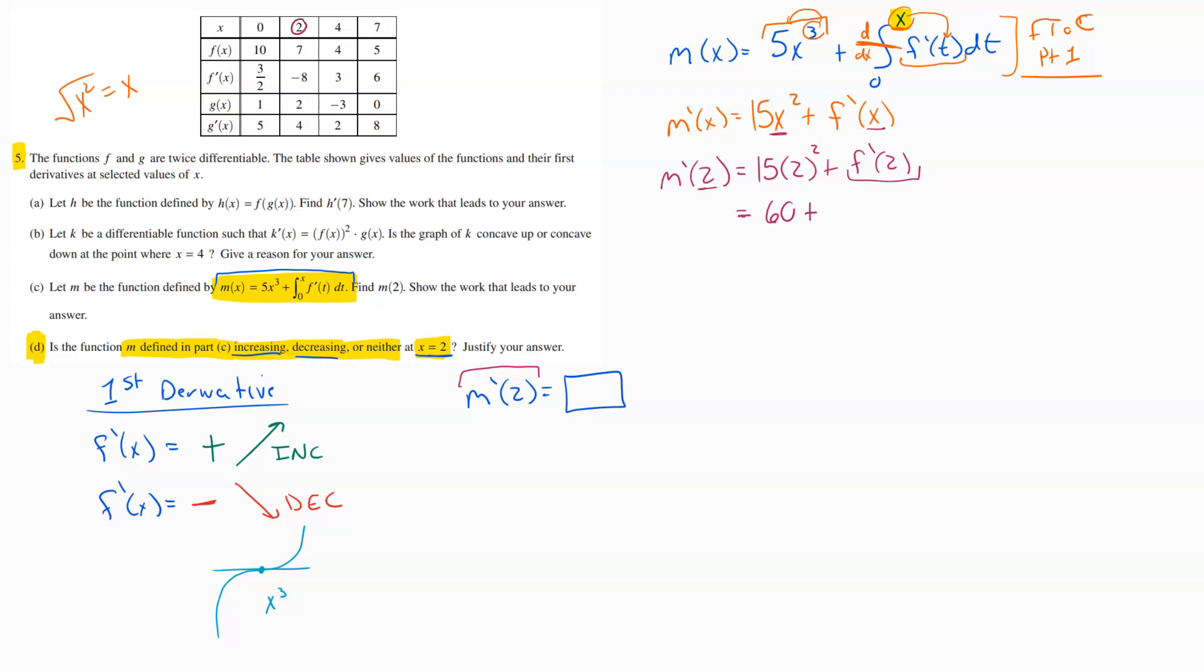4 times 15 is going to get us 60, plus F prime of 2 we're going to find from our table. So at 2, our F prime value is negative 8, so we would get minus 8. Cleaning that up, we end up with M prime of 2 is 60 minus 8, that's 52.